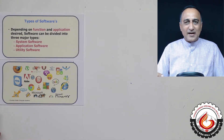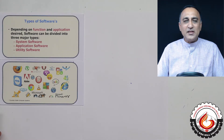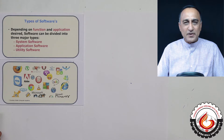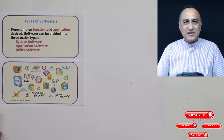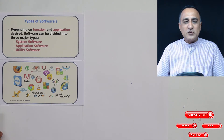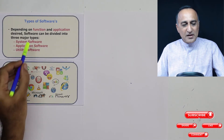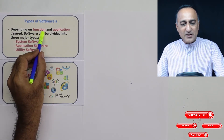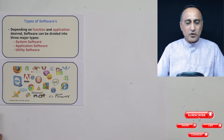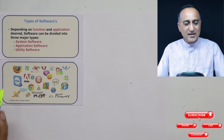To make it clear with examples: system software includes Linux, Windows operating systems, compilers, and interpreters. Application software includes things like library management, inventory control management, accounting management, billing management, and sales management. Based on what they do — their function and the type of application — software is classified into these three categories.